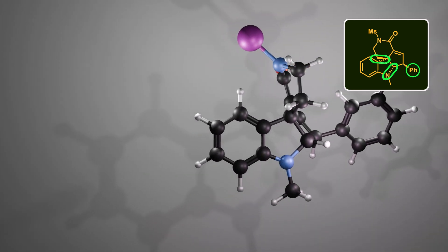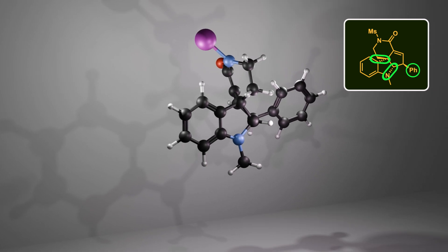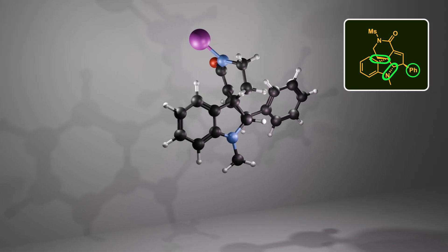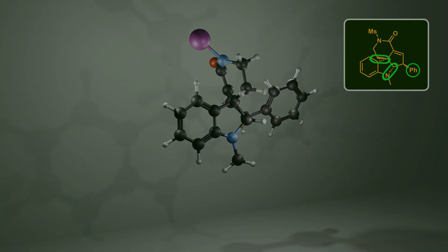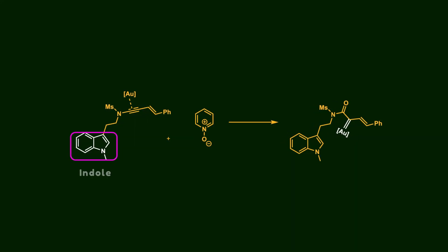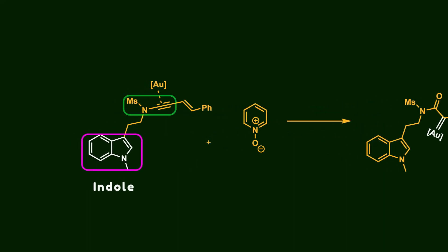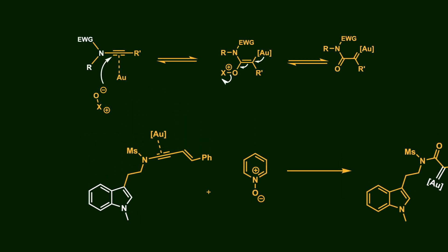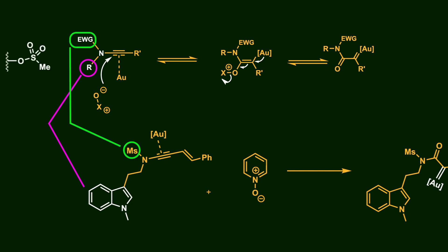Constructing such a complex fused ring system with precise installation of substituents is a significant challenge. To achieve this, a substituted indole was chosen as a starting material, where an ynamide unit was installed at 2-carbon distance. In this system, the indole serves as an R-group in the ynamide, while mesylate acts as an electron-withdrawing group.